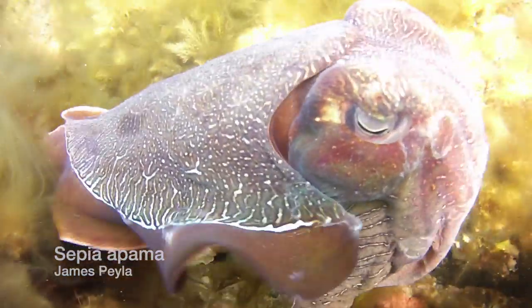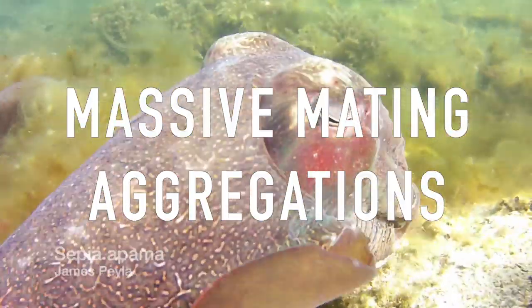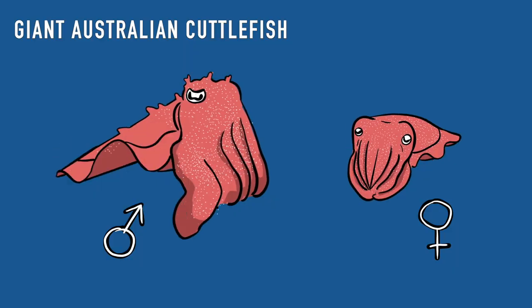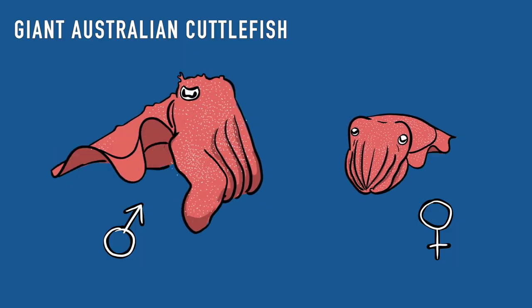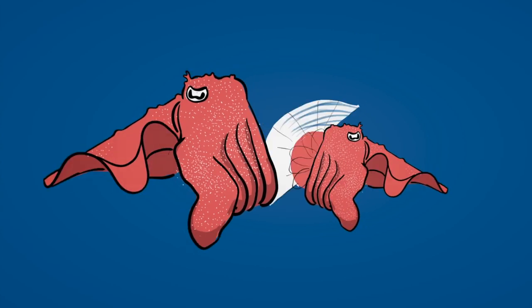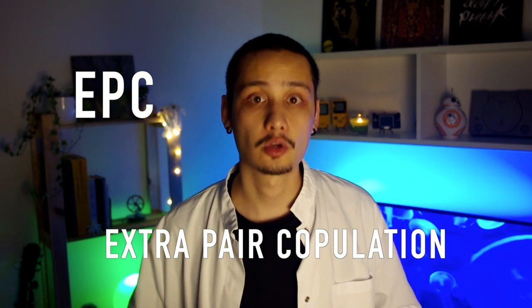Octopuses are terrible at flirting. The giant Australian cuttlefish, Sepia apama, gathers annually in massive mating aggregations, where up to 170,000 cuttlefish meet to spawn. The males are usually bigger than the females — twice as big — and they also have a big pair of fourth arms. The sex ratio averages four males to one female, so the males have to be smart in order to increase their chances to mate. Big males pair with females and guard them.